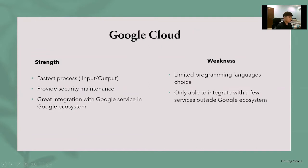Next, Google Cloud. For the strength of Google Cloud, it provides the fastest processing among the three and also provides secure maintenance on a monthly basis. It also provides very great integration with Google services within the Google ecosystem. However, its weakness is limited programming language choice, and it is only able to integrate with a few services outside the Google ecosystem.